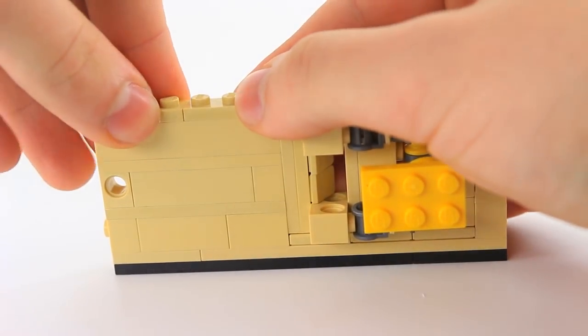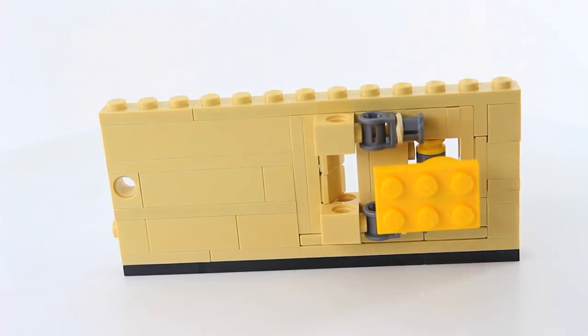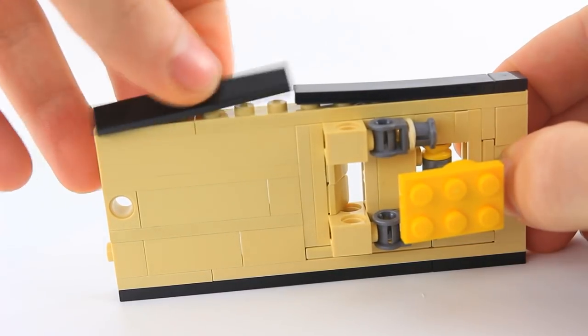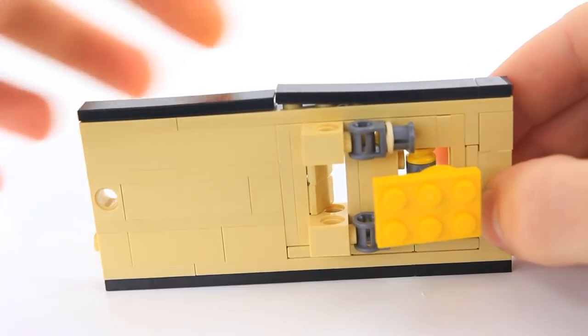On the left side put on a 1x3 plate, and for the last layer we're going to put on a 1x1 tile, a 1x6 tile, and finally another 1x6 tile. Just push everything on.